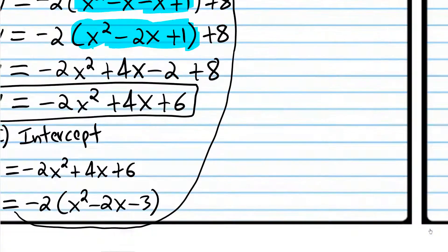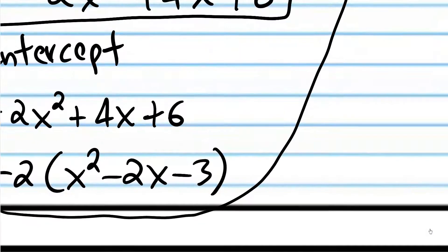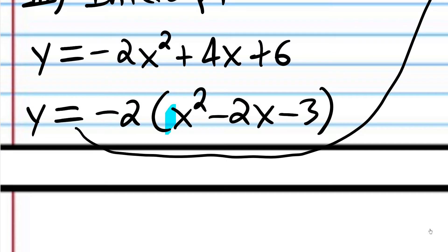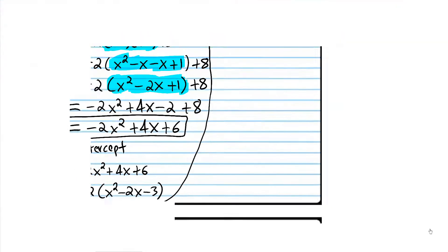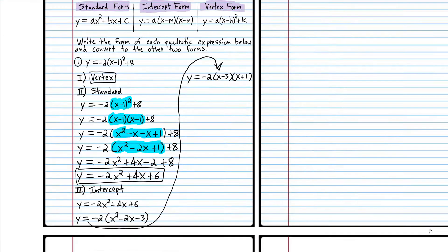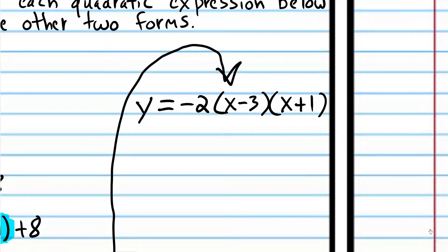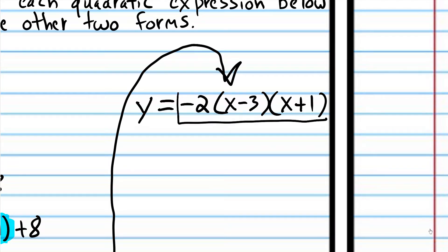At that point, we're done. Be aware: if there's a coefficient on the x squared term, the two numbers would not necessarily add up the same way — you'd need to FOIL back to check your answer using trial and error. But that is intercept form, so we're going to rectangle that.